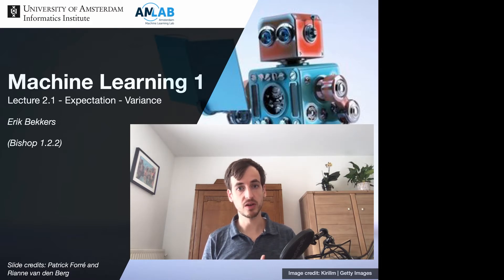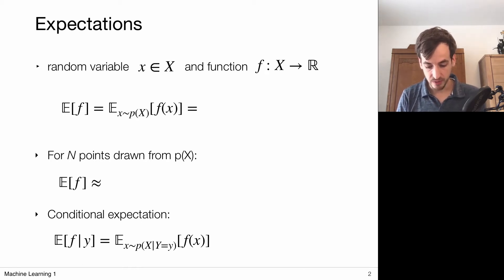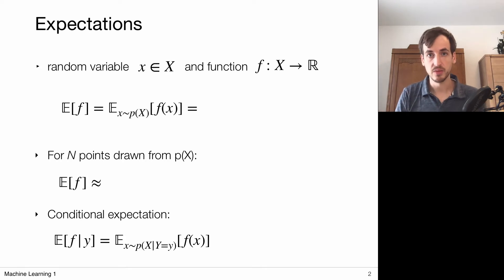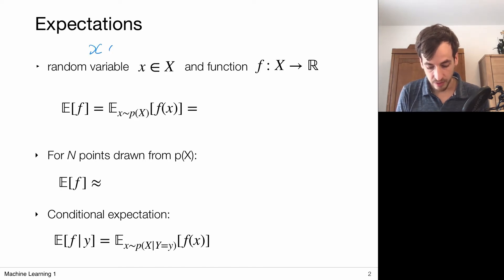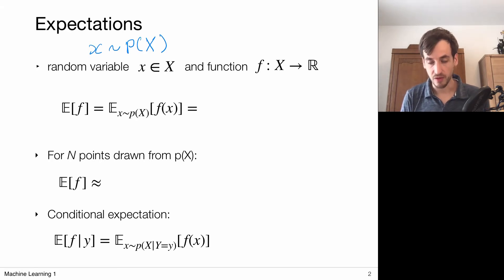This Gaussian distribution will also serve as an example for explicitly computing the expectation and variance. So let's start with the expectation. Remember we're talking probability theory here, so we're dealing with random variables. This random variable can take on some value denoted with small x out of a set of all possible outcomes denoted with capital X. Some outcomes are more probable than others, and we denote this by saying that X is a random variable with respect to some probability distribution P of X. Expectations are computed from functions — functions from X to R.